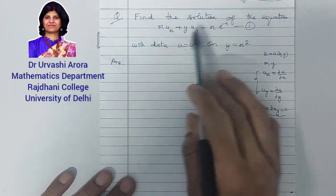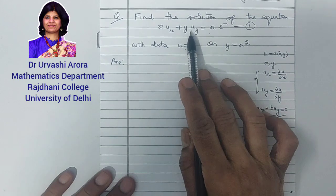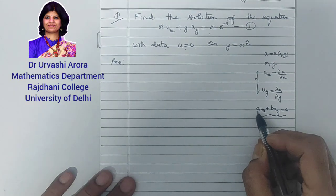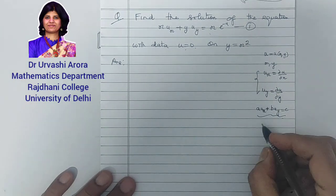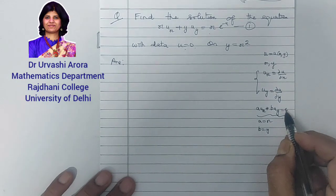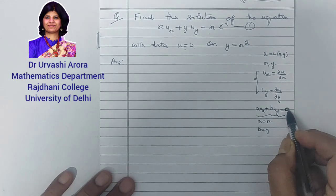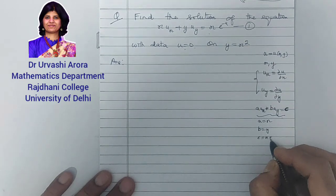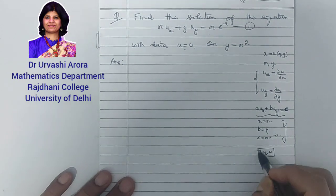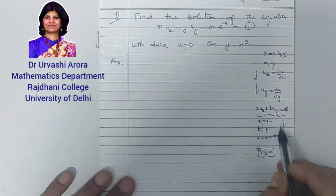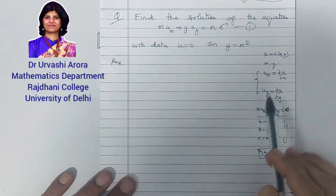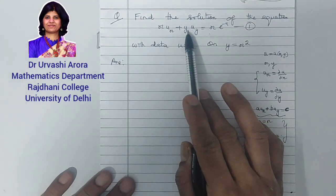This particular equation marked as 1 falls in the category of quasi-linear first order PDE because: the coefficient of u_x, which is a, equals x; the coefficient of u_y, which is b, equals y; and c, the right-hand side term, is x·e^(-u). All of a, b, and c are functions of x, y, and u only, which makes this a quasi-linear partial differential equation of first order.